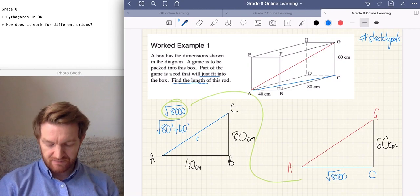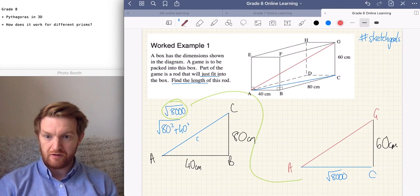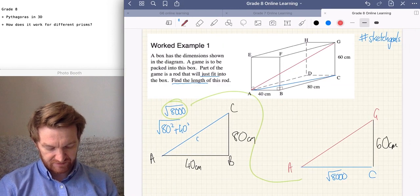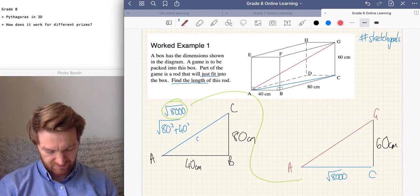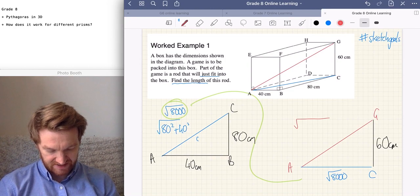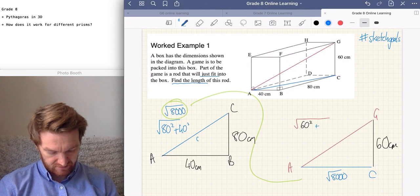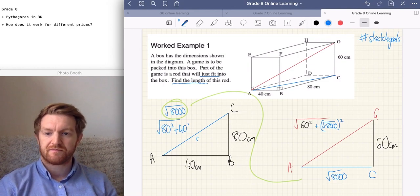Now, the reason we're going to keep it as a root is going to be very obvious, I hope. So, again, we want to find the longest side, A to G. So, we know that it's going to be the square root of the two smaller sides added together. The 60 squared, but also the root of 8,000. But we're going to have to square it.